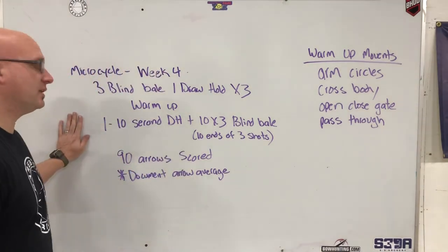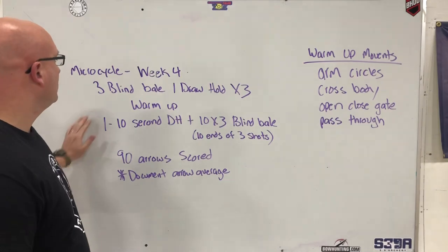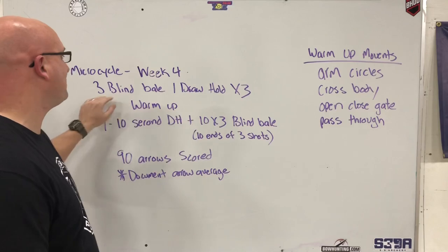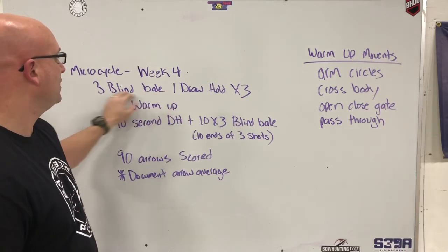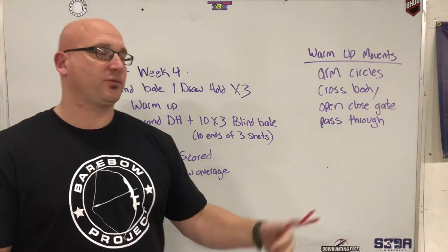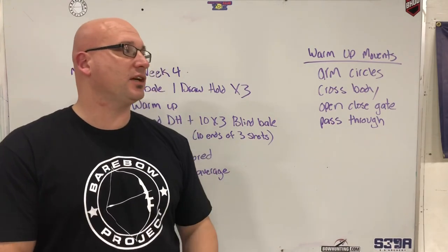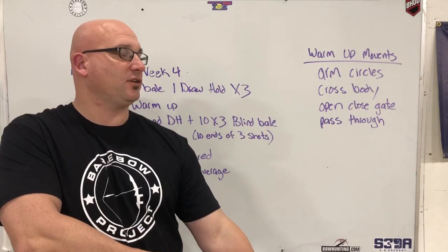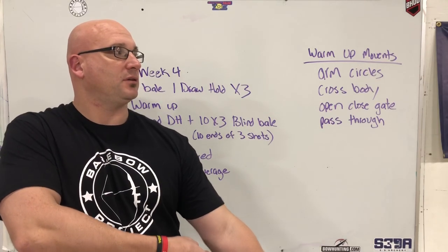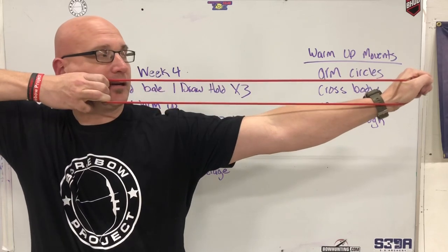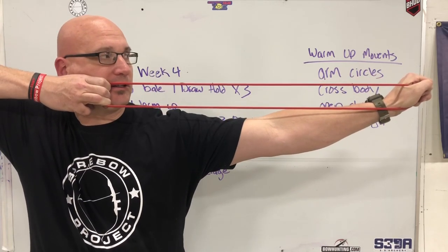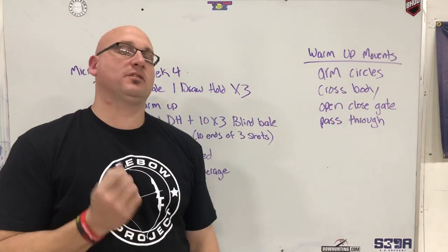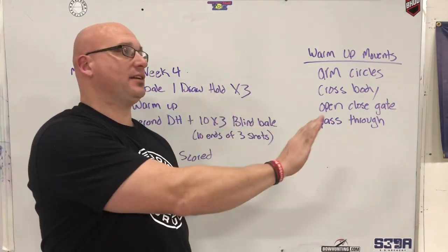So with this week one, just to explain what it is, week one is three blind bail, one draw hold times three warm-up. What that means is that you're gonna walk up to your bail, you're gonna shoot three blind bail. So that is three to five yards. You're gonna run your shot process, set your stance, go through your steps, set your hook, set your grip, raise to draw, come into your anchor, aim, close your eyes and feel the shot.